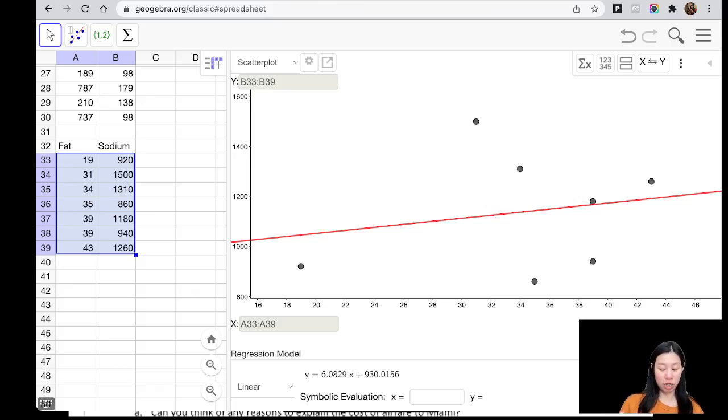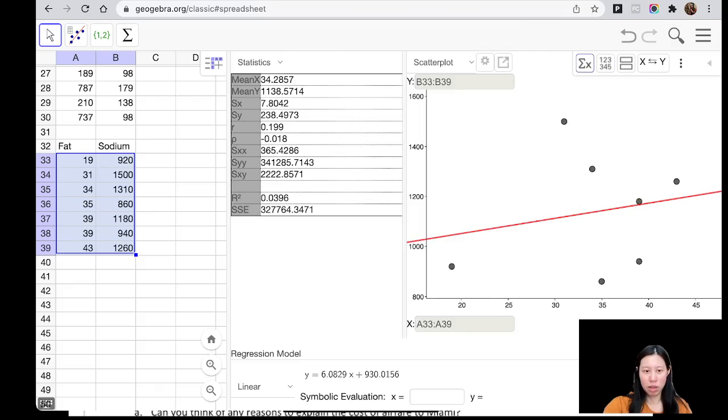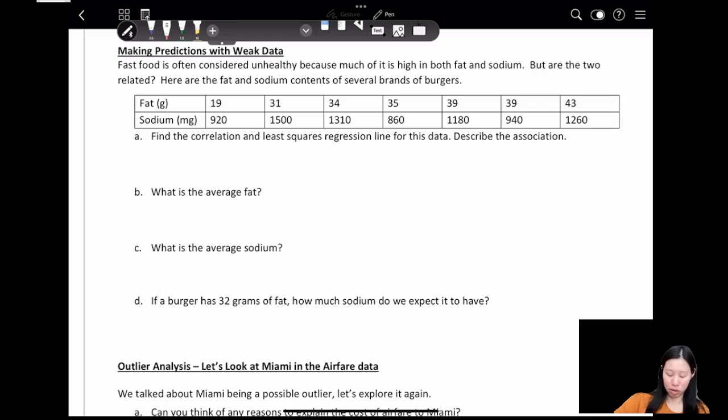The first question asks you to find the correlation and least square regression line for this data and describe the association. From the graph we can tell that this is a positive regression, but it's really close to zero but still positive. We can say this is quite spread out. Let's take a look at the statistics. Well, r is equal to 0.199 - that means this is a weak correlation.